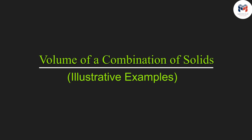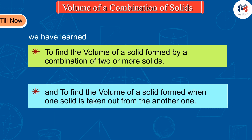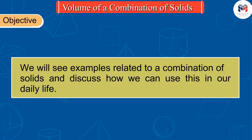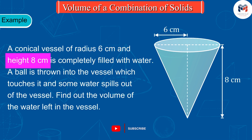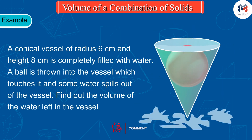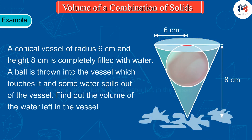Welcome to this video. Till now we have learned to find the volume of the new solid formed by the combination of two or more solids, and of the solid formed when one solid is taken out of the other. Today we will see how we can use this in our daily life. A conical vessel of radius 6 centimeters and height 8 centimeters is completely filled with water. A ball is thrown into the vessel which touches it and some water spills out of the vessel.